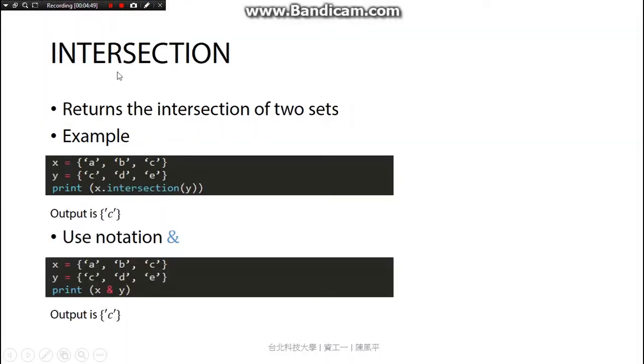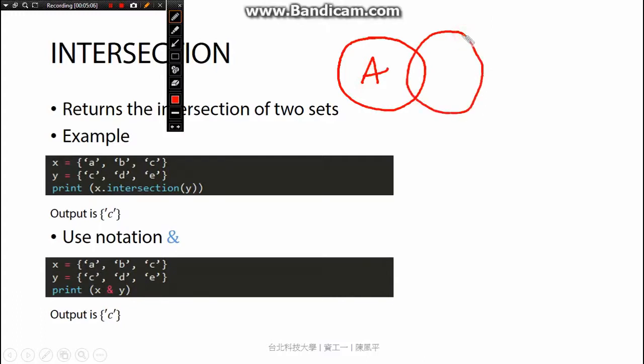The next operation is intersection. It returns the intersection of two sets. So what it means by saying it returns the intersection of two sets - I will draw it here. This is the set a, this is a set b. So the intersection of two sets, it could be here.